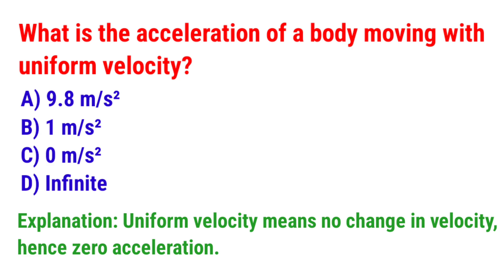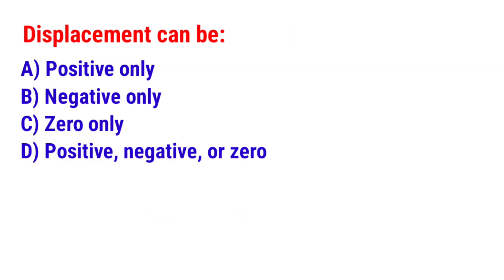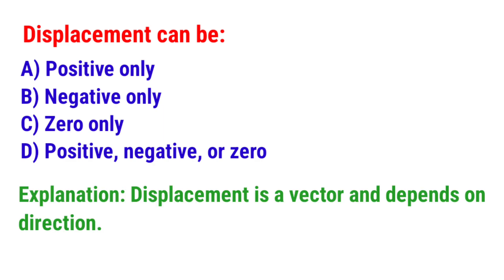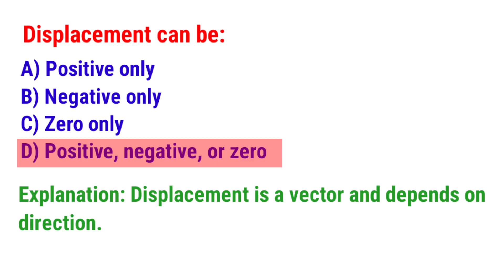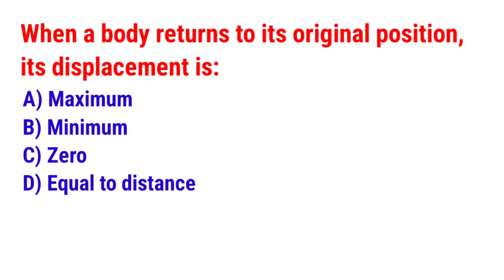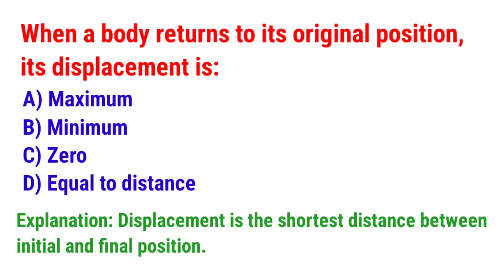Next question: What is the acceleration of a body moving with uniform velocity? The answer is option C — Zero. Next question: Displacement can be? The answer is option D — positive, negative, or zero. Next question: When a body returns to its original position, its displacement is? The answer is option C — Zero.